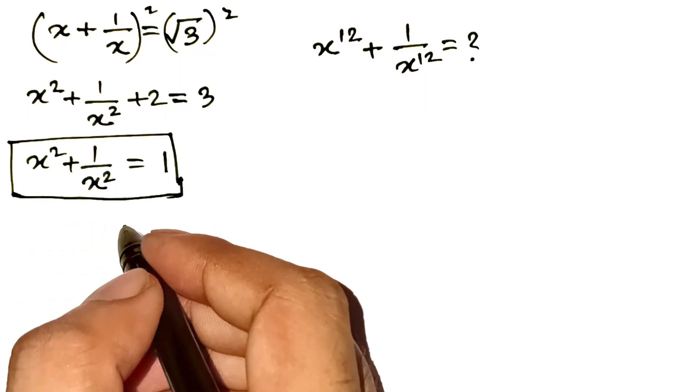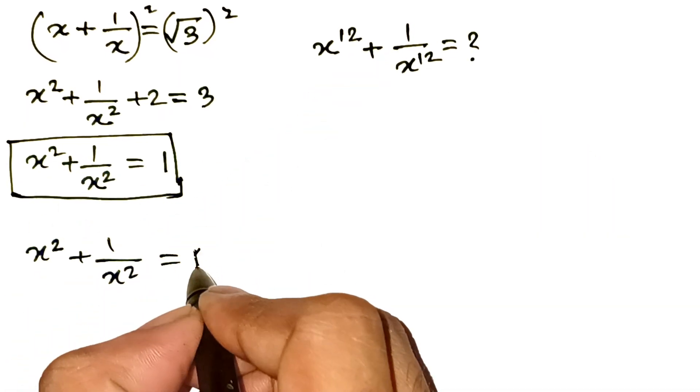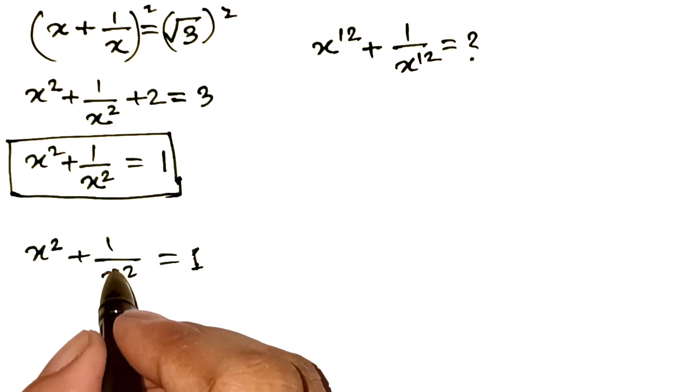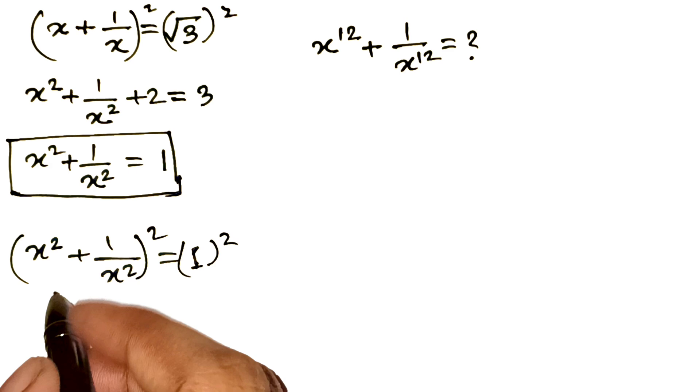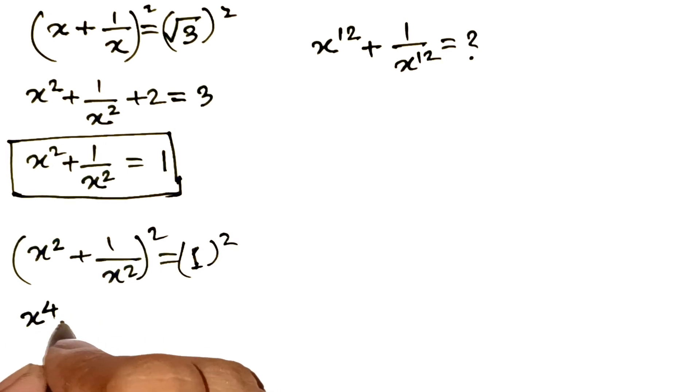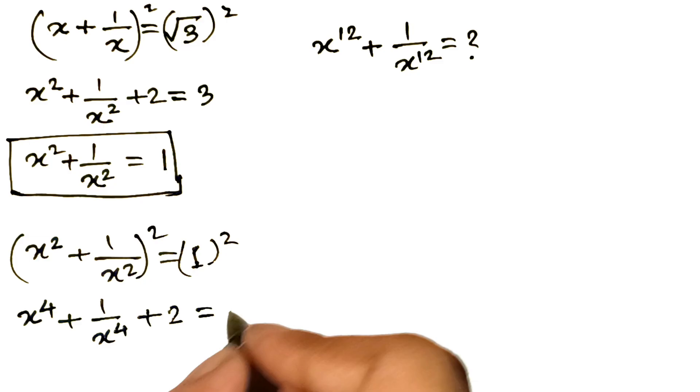But we're not stopping here. To reach 12th power, we keep building up. So we take this new equation, x squared plus 1 over x squared equals 1, and square it again. This time, the left side becomes x to the power 4 plus 1 over x to the power 4 plus 2. And the right side becomes 1.